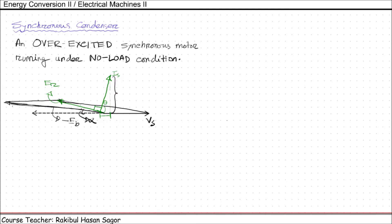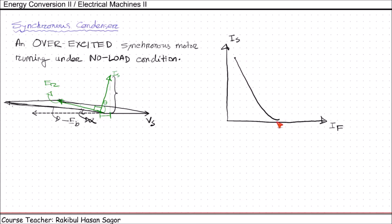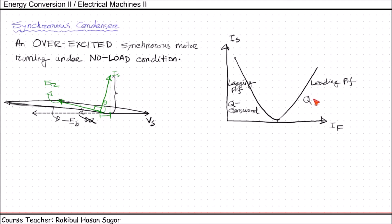If we draw the V curve for the synchronous condenser, with the x-axis where we will take field current and the y-axis where we are going to take armature current — for a certain field current it will start from here, and the armature current will go almost near to zero value, because at unity power factor the current is very very low, and again it will be increasing. The V curve looks like this. We have lagging power factor here, where Q — that means reactive power — is consumed. And this is the unity power factor case. And here we have leading power factor, and at this region reactive power is supplied to the system.